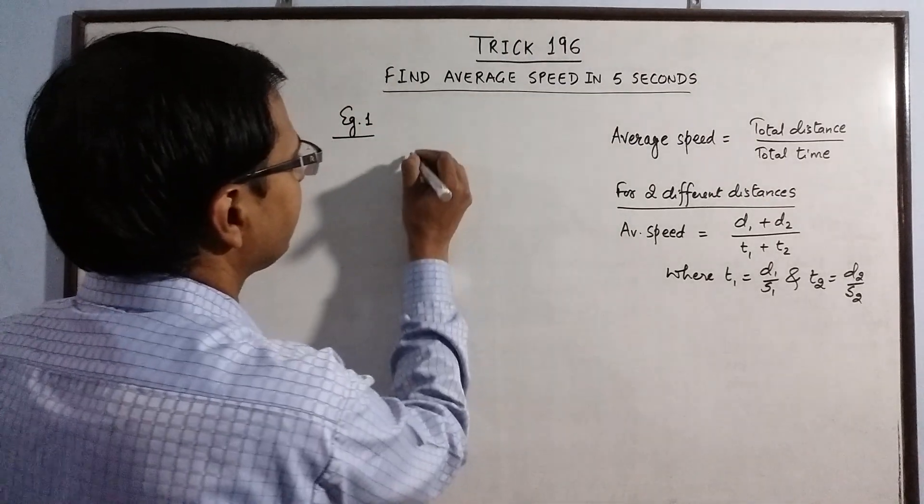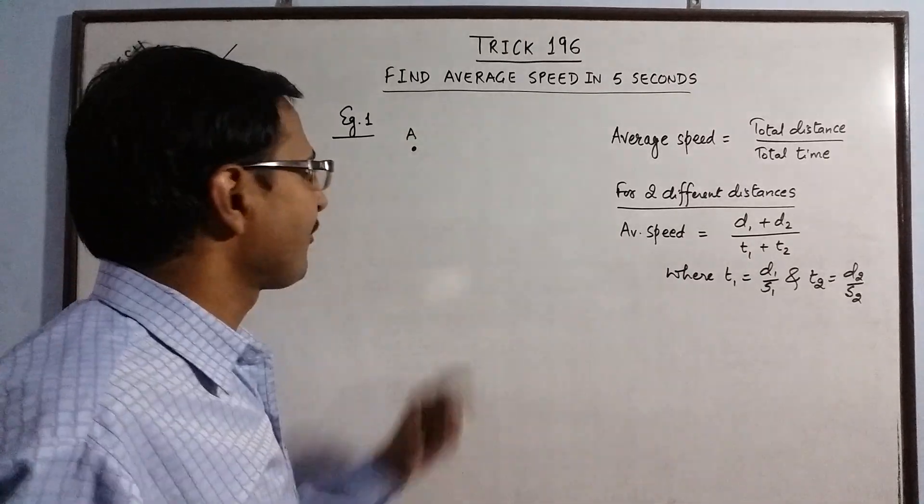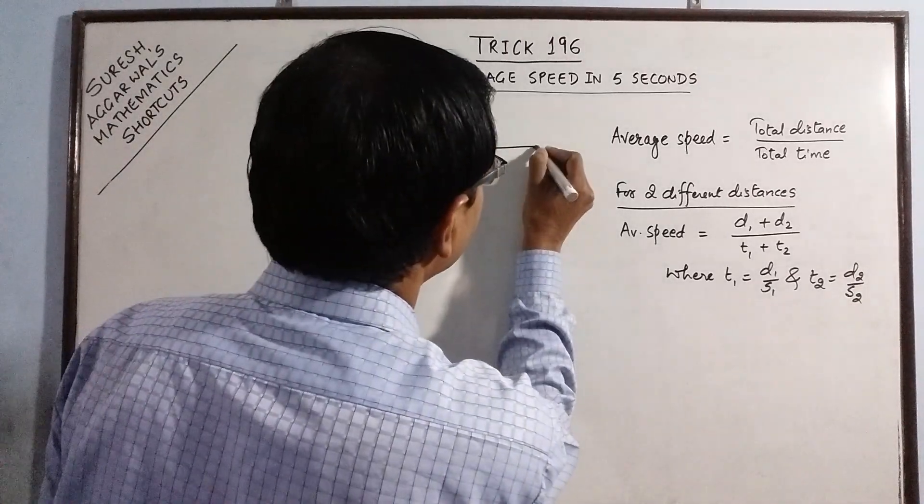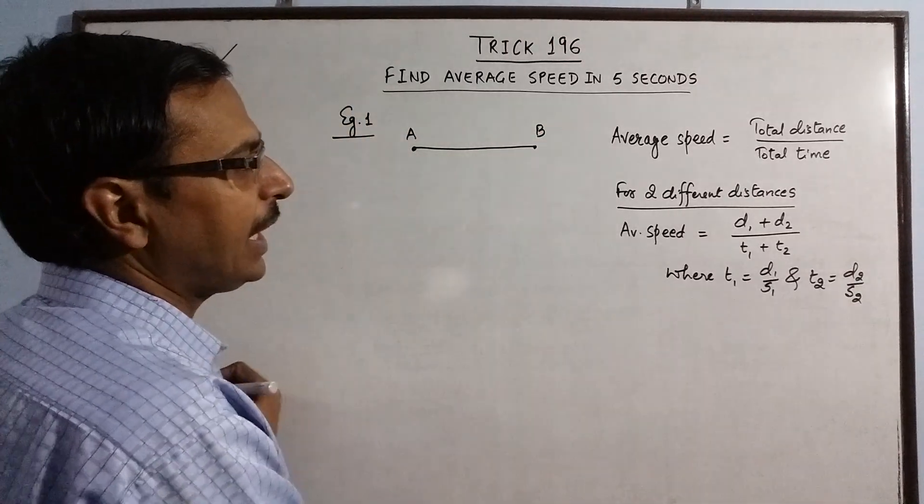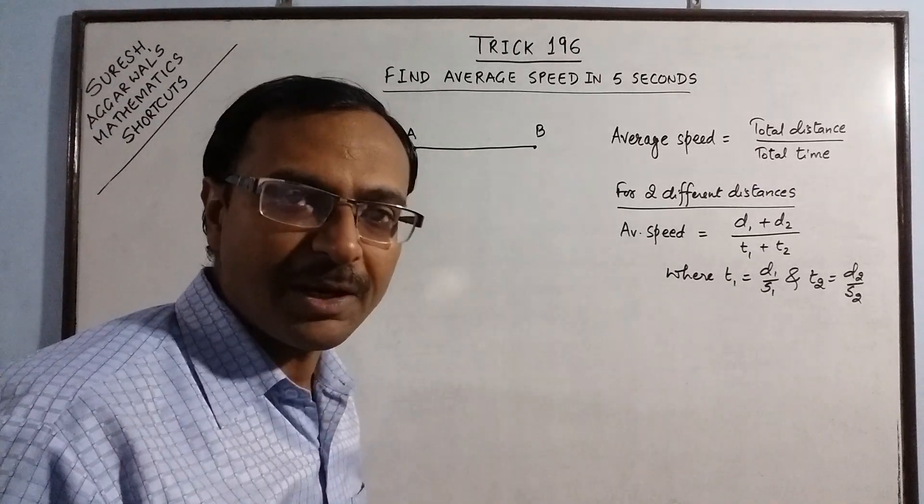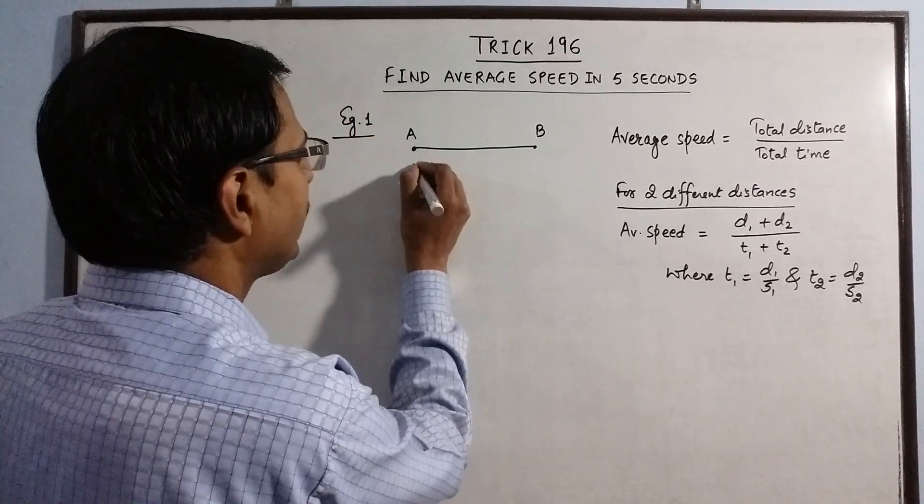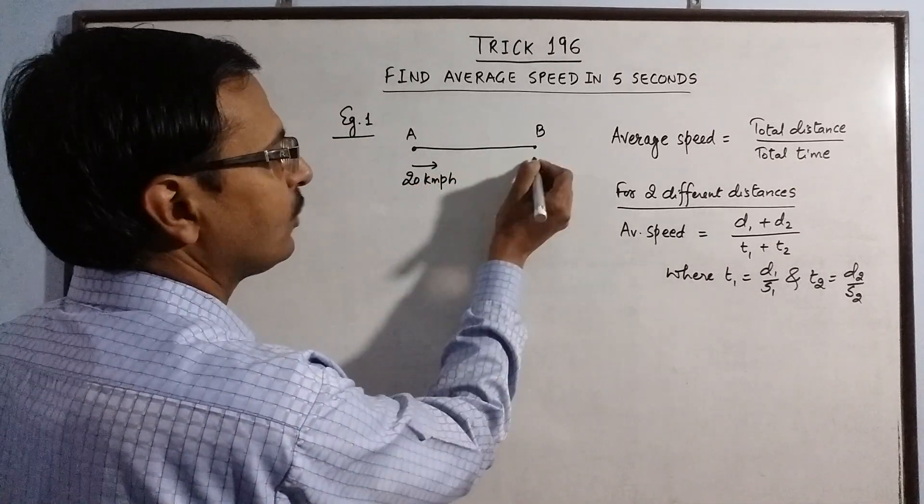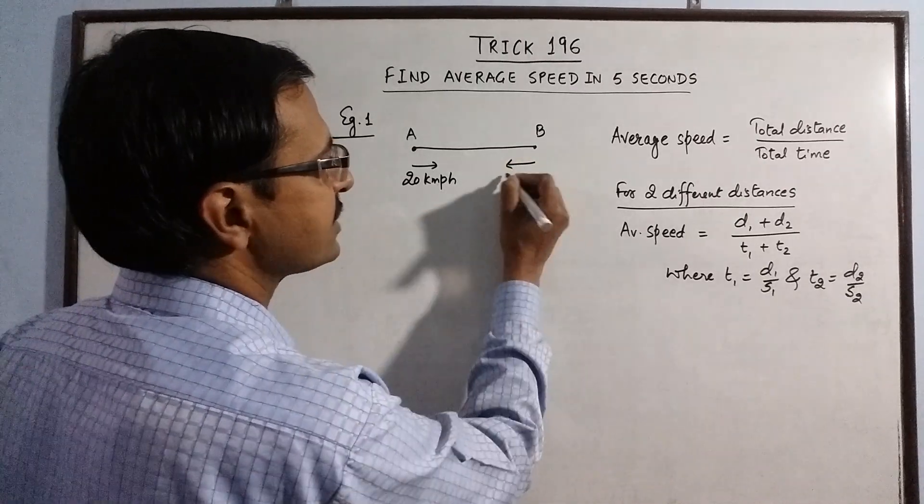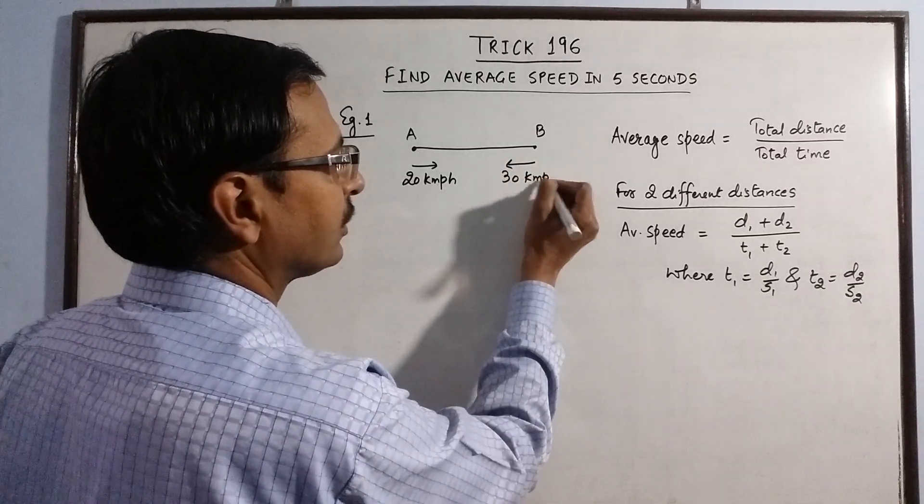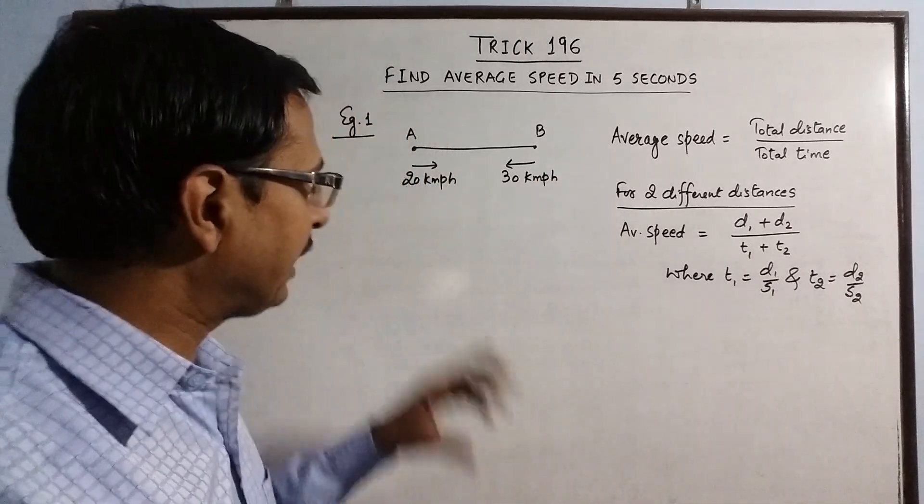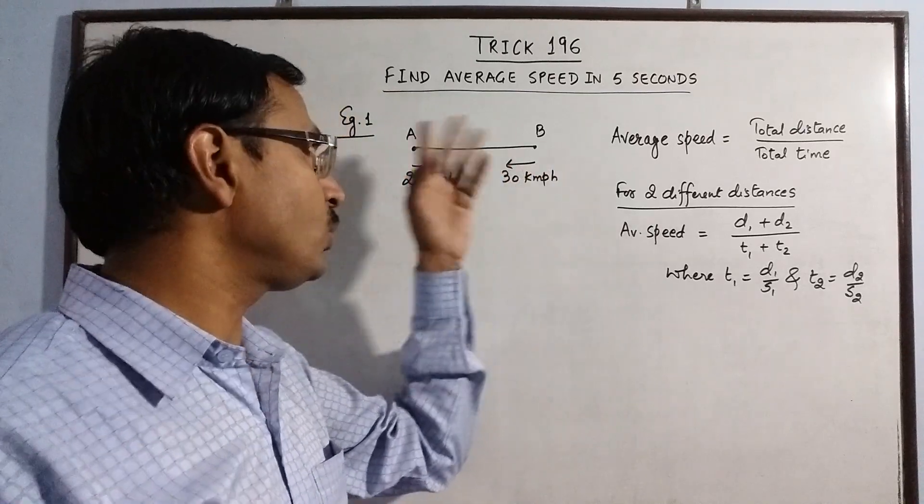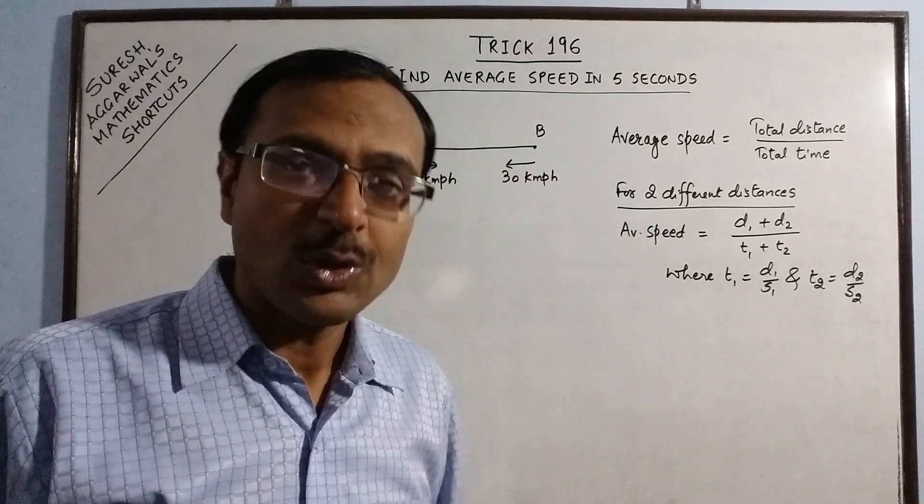See this is example 1. Now, suppose we have this as the source, this is the starting point and a person is travelling from A to B and we do not know the distance between A and B. While going the speed is 20 km per hour and while coming back the speed is 30 km per hour.